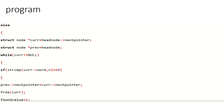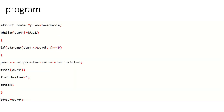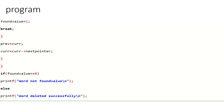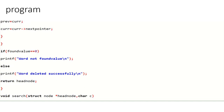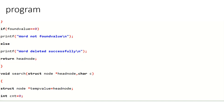If not, it goes to an else statement. A struct node pointer 'current' is set equal to head node's next pointer, showing the address of the next node. A struct node pointer 'previous' is set equal to head node. While current is not equal to zero, strcmp is called. If found, previous's next pointer is set equal to current's next pointer, effectively deleting the current node.